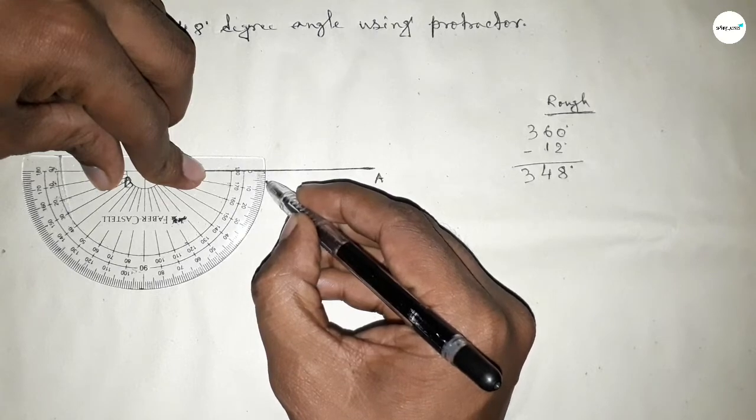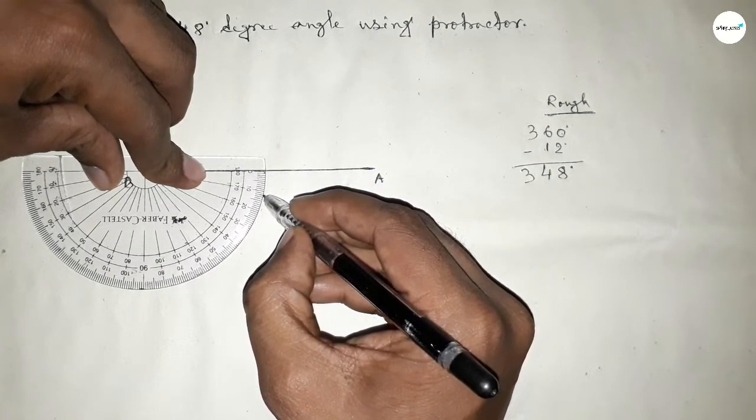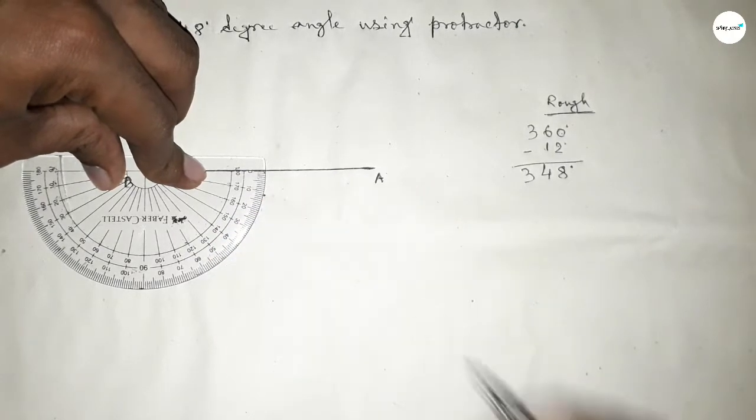Now subtracting 12 degree angle from 360 degree angle, so counting here 10, 11, 12. So this is 12 degree angle.